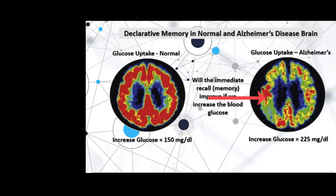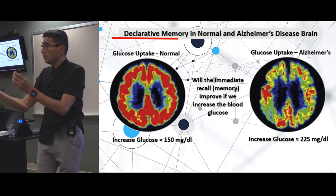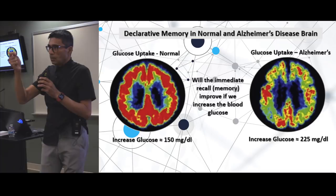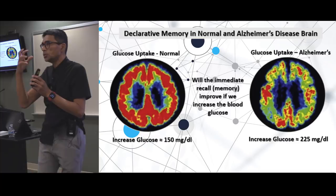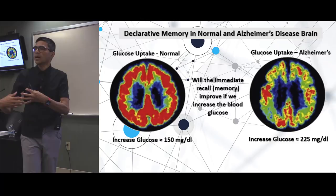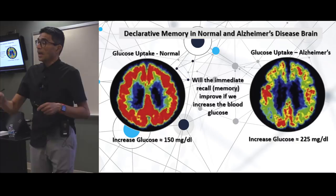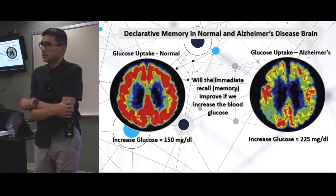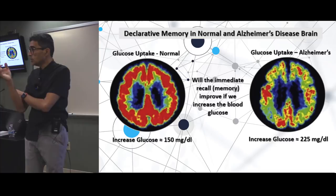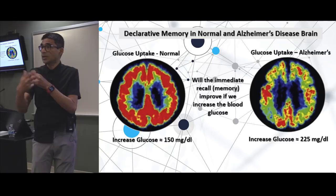So there is something called declarative memory. What that means is that if I give you a memory test — ten different things to remember, ten names, ten objects — and I wait a few minutes and ask for recall, how good is your memory? I was surprised to find that if you take a normal person and give them a sugar bolus — ask them to eat candy and raise their sugar to 150 — what happens to their declarative memory? It goes up, because memory is an energy-intensive procedure. It takes energy or fuel to form new memory because it's actually a chemical reaction.